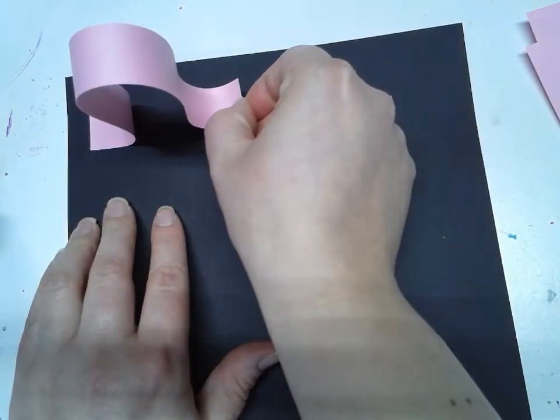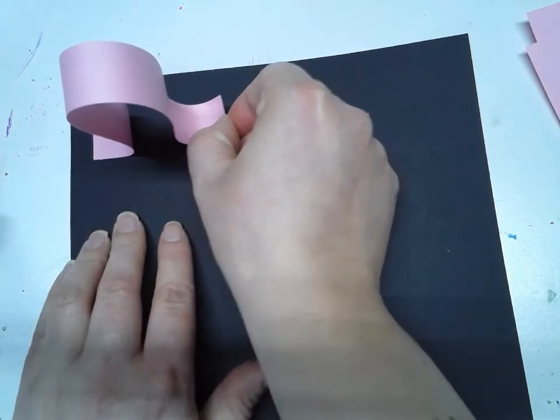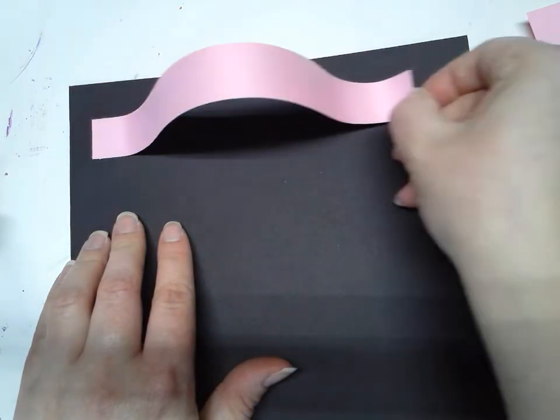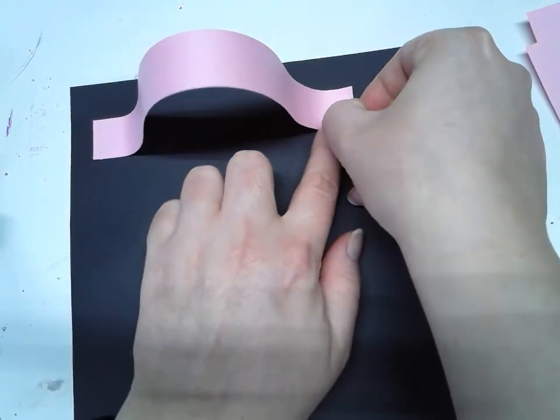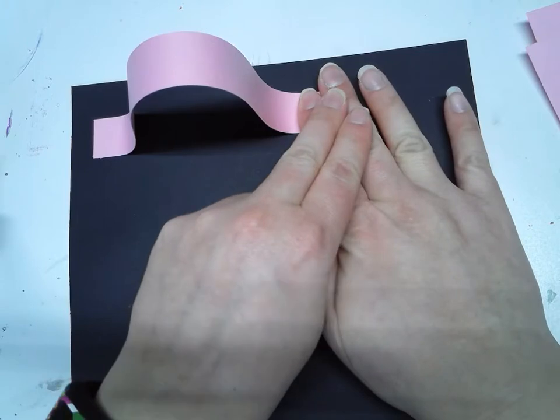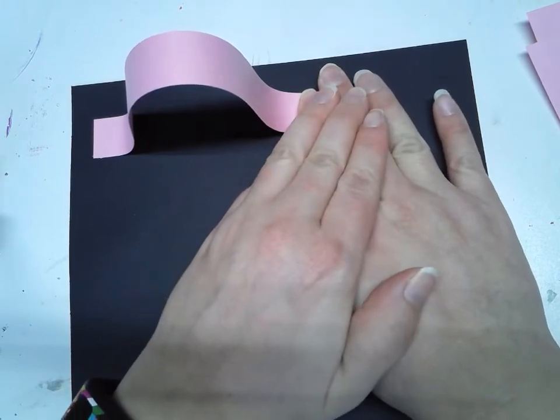Then I'm going to put this closer to the beginning where I glued the first time. See how the closer I get, the taller it gets, and when I go further out it gets shorter. You can decide where you want it. Then I'll hold it down and count to ten.